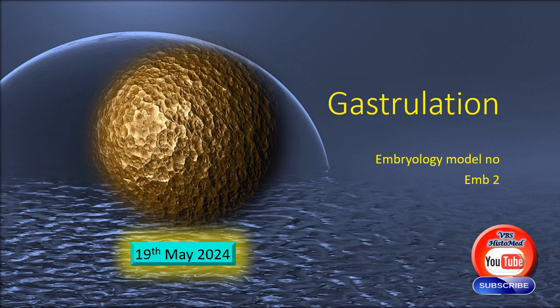This embryo model is a germinal stage embryo from the third week of development. Here you will see the conversion of the bilaminar embryo into a trilaminar embryo. Therefore, this is a model describing the process of gastrulation.